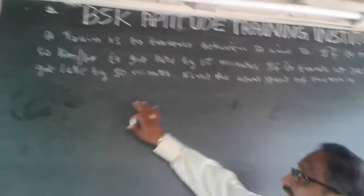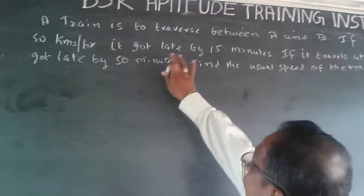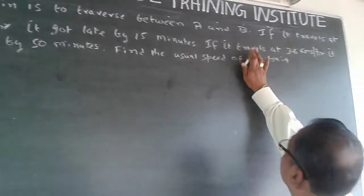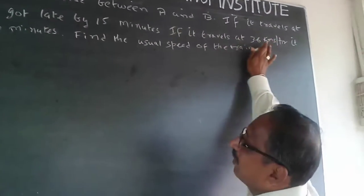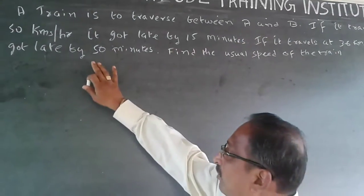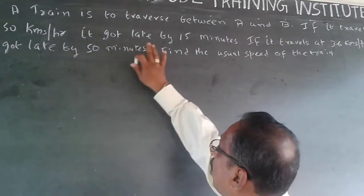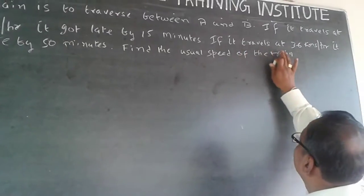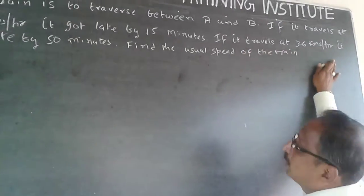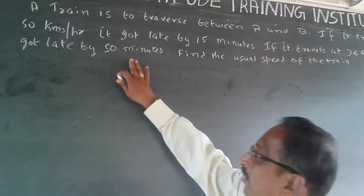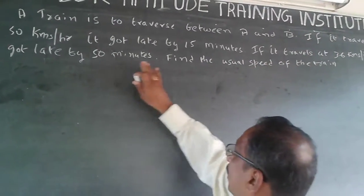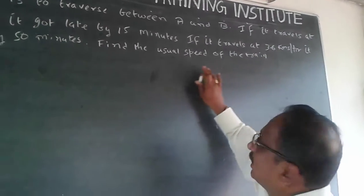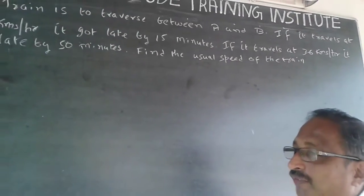The question is: a train is to traverse between A and B. If it travels at 50 km per hour, it got late by 15 minutes. If it travels at 36 km per hour, it got late by 50 minutes. Find the usual speed of the train.